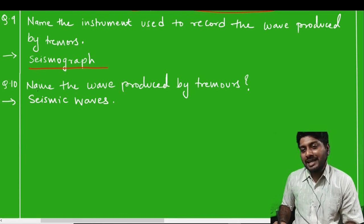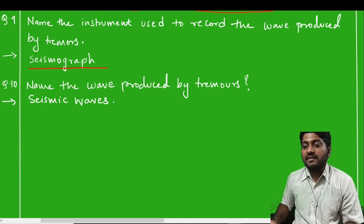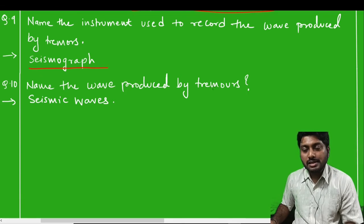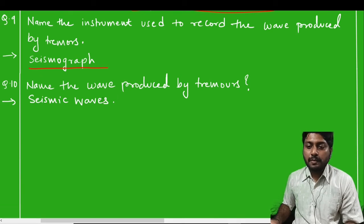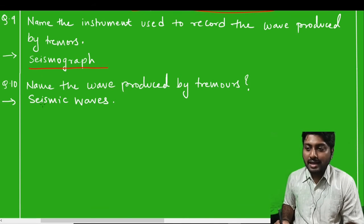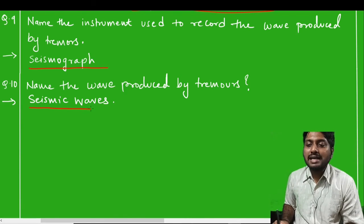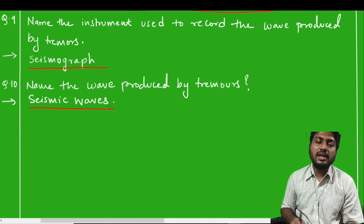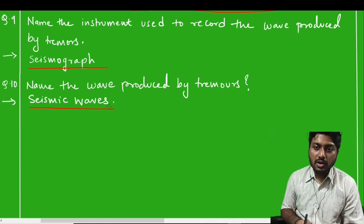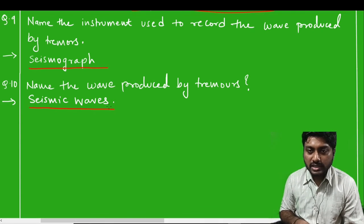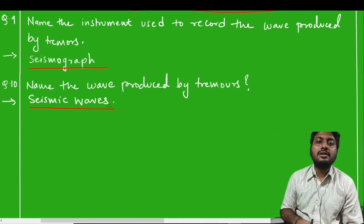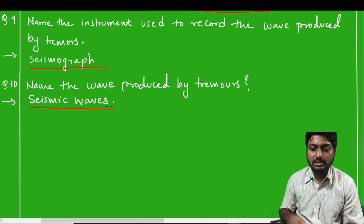Question number ten: name the waves produced by tremors. The waves which are produced by tremors are called seismic waves. I hope all the questions are clear to you. Thank you so much.